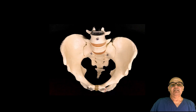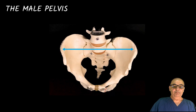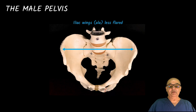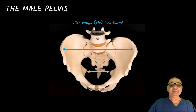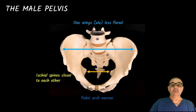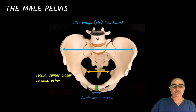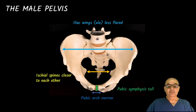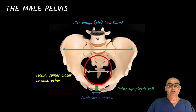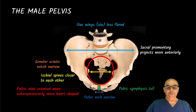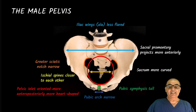Now let's look at the male pelvis. The alas are not that far — they are less flared. The ischial spines' distance is comparatively lesser than a female pelvis. The pubic arch is narrower; it is not obtuse, it is acute. The symphysis pubis, as compared to the female version, is taller. If you look at the pelvic inlet, it's more anterior-posterior and it's a kind of heart shape. The greater sciatic notch is less wide, and the sacrum is more curved as compared to the female.